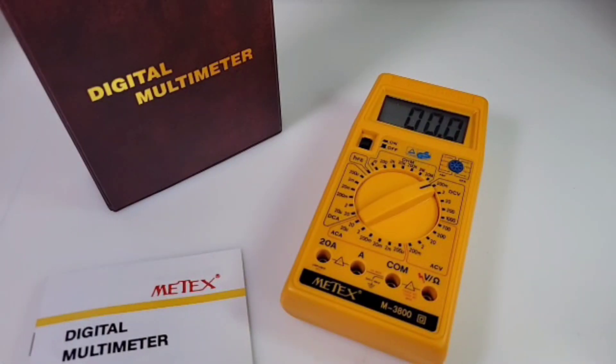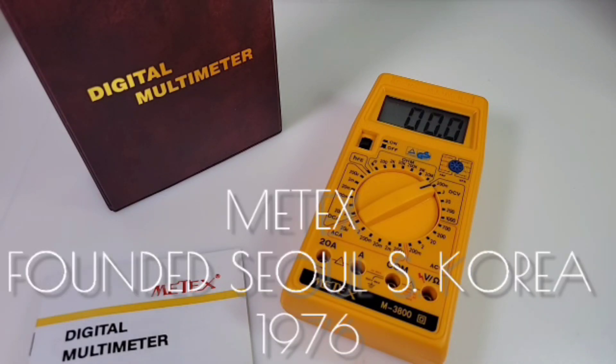It has that also yellow color. I love that color, something about it on a multimeter, it just looks so good. Metex was founded way back in 1976, based out of Seoul, South Korea. Metex Corporation, they have come up with quite a few different meters in the past.